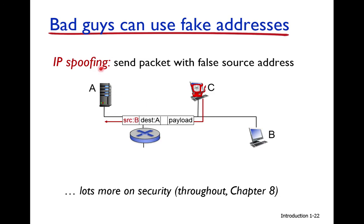Nowadays, when you send data with a spoofed IP address, your ISP will block you. However, an attacker can install a virus on machine B and use B's system to send data with another IP address — for example, machine D's IP address — so the ISP blocks B instead. We will discuss all these security attacks in detail in chapter eight.